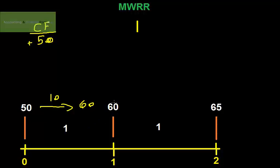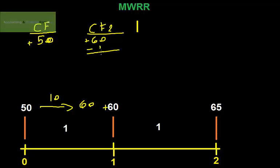By the end of the first period, the same investor gives you another $60 to be invested in the same stock. So the second cash flow is going to be equal to $60. But you have to pay this investor a $1 dividend, so the net amount is going to be $59.